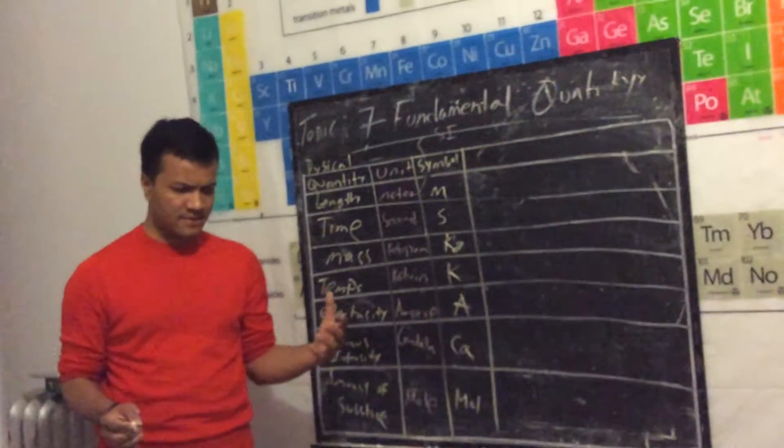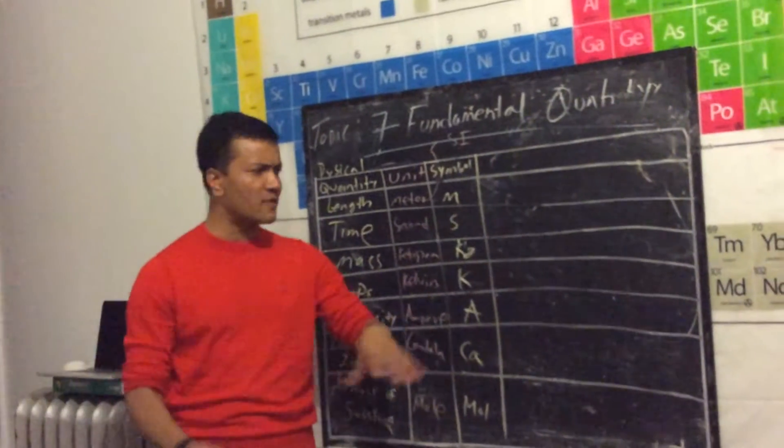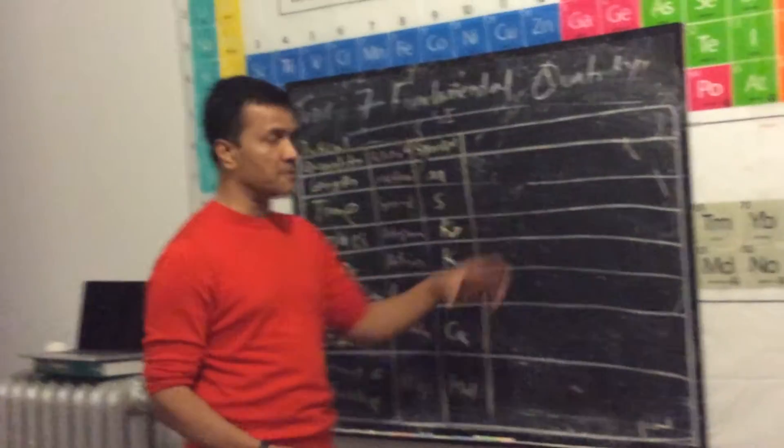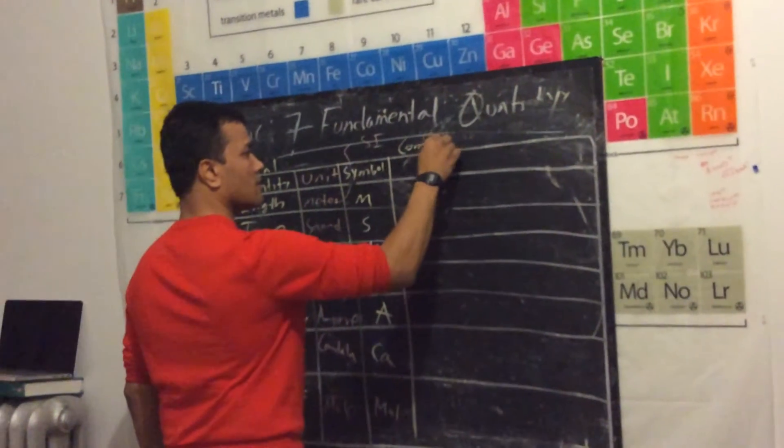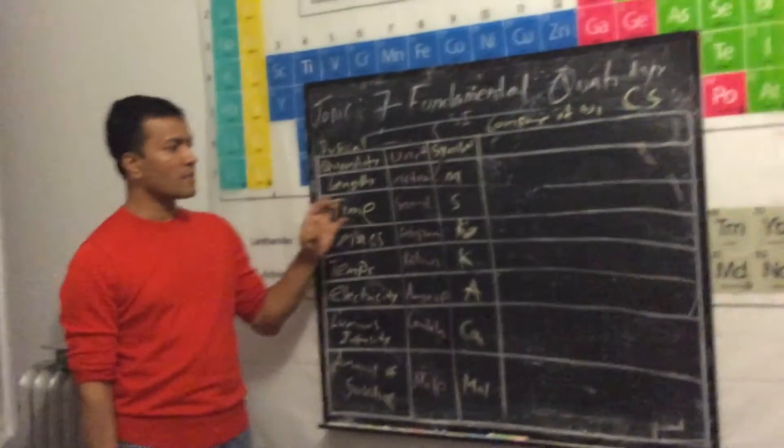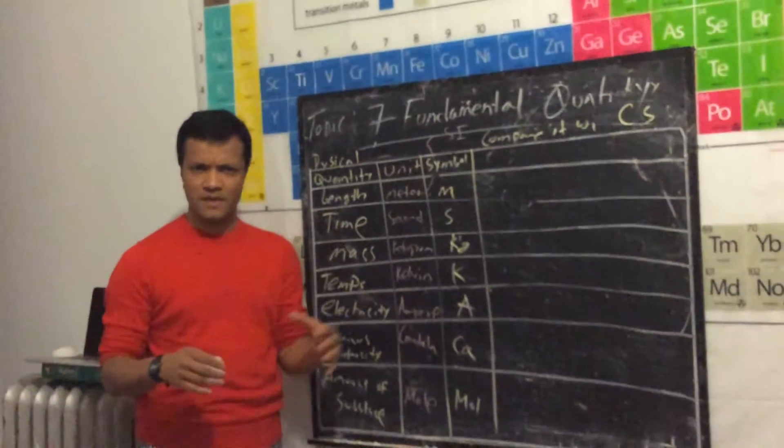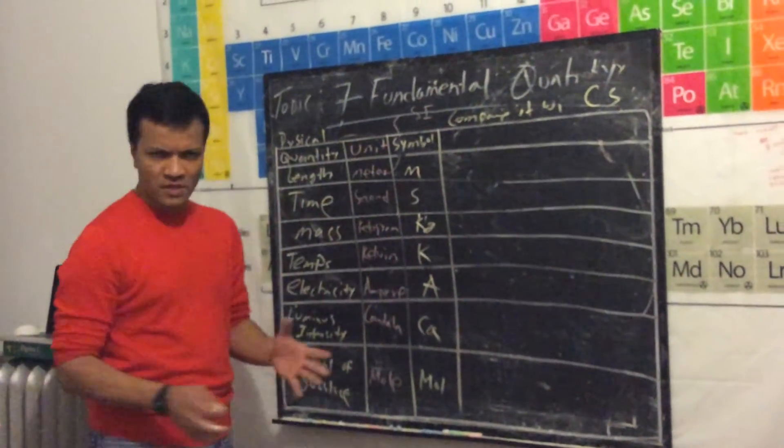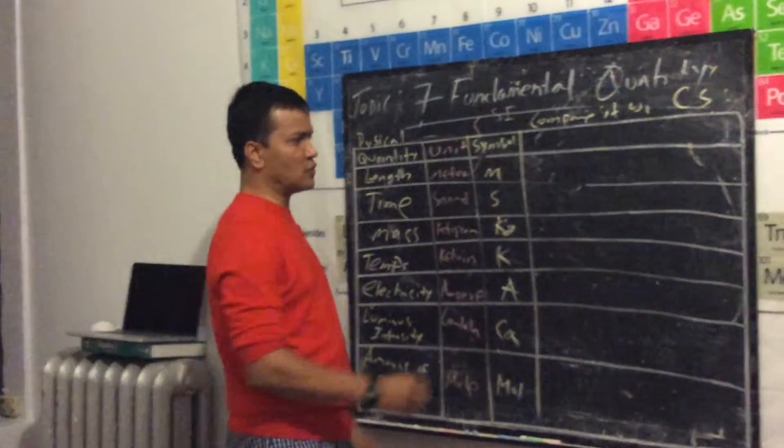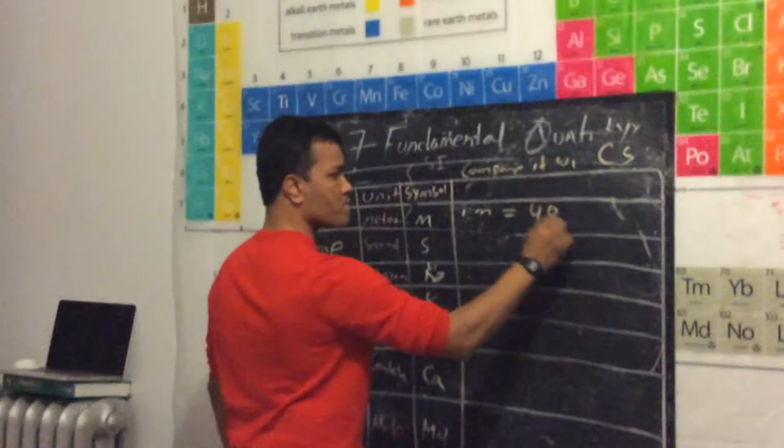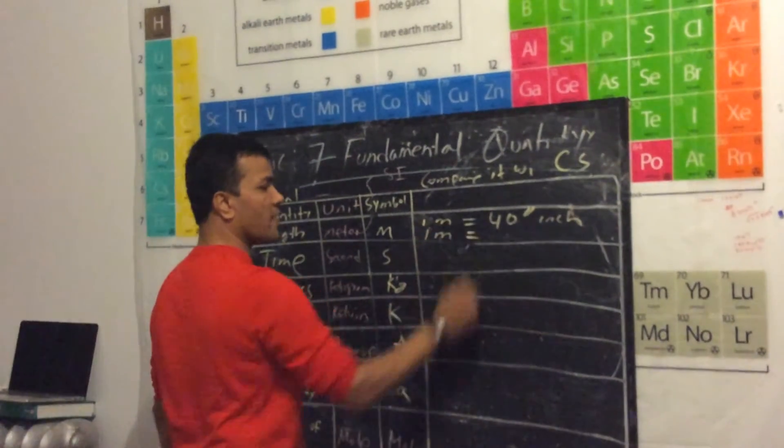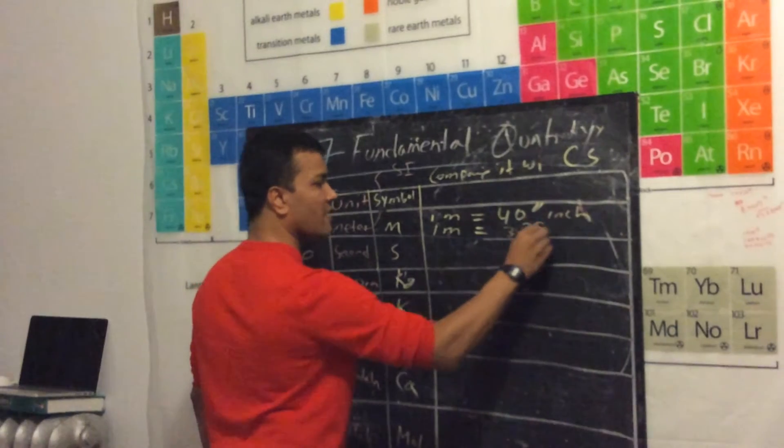To get the hang of it, all the time you have to compare things. This time we're going to compare with customary system. In customary system, for length we use either inch or foot. If it is more than one foot, we call it feet. So one meter is equal to 40 inches, or one meter is 3.28 feet.